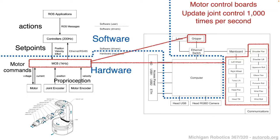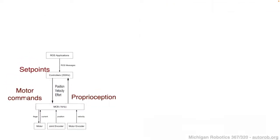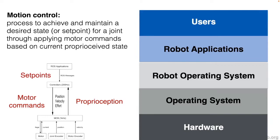At the highest level, a robot application provides a set of actions. Those actions get interpreted by lower-level joint controllers within software, which define a set of set points in configuration space that each joint should take to achieve the desired action. Once those set points are defined, they're communicated to the hardware and converted into motor commands, which then get physically actuated in the motors on the robot. This high-to-low framework of actions moving down to motor commands should be similar to ideas we discussed when introducing robot operating systems.